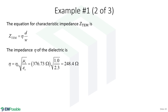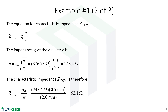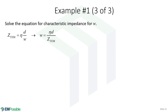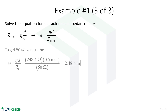Plugging all the numbers into our impedance equation gives approximately 62.1 ohms. For the second part, we want to adjust the width to achieve a 50-ohm line. This is very typical for transmission line design — normally thickness and permittivity are fixed, and the width is the design degree of freedom. We take our impedance expression, solve for W with impedance set to 50 ohms, and find that the width of the line needs to be approximately 2.5 mm.